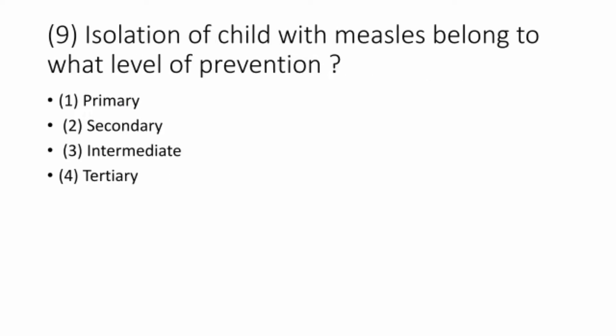Question 9. Isolation of children with measles belongs to what level of prevention? The correct answer is secondary prevention. Option 2 is correct.